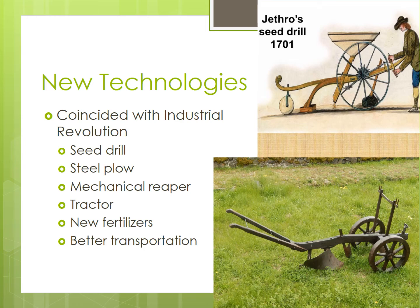Early plows were developed to break up and turn over soil before planting, but John Deere developed a steel plow that was stronger and lighter. The mechanical reaper was developed by Cyrus McCormick to help harvest grains. It both cut and bundled the grains and helped to increase yields at least 10 times. The tractor, when powered by the internal combustion engine of the later industrial revolution, helped increase efficiency and further reduce the amount of manual labor that was needed on farms.